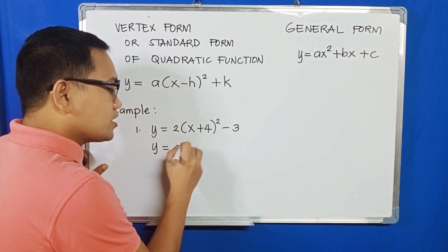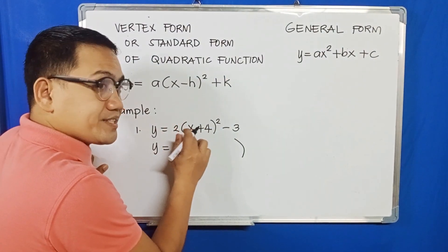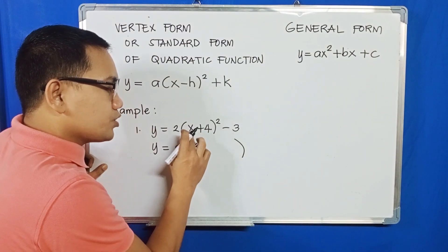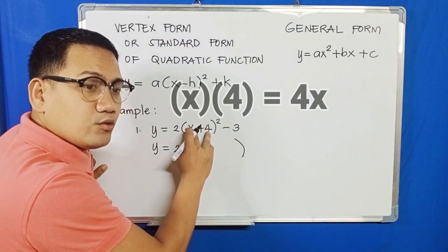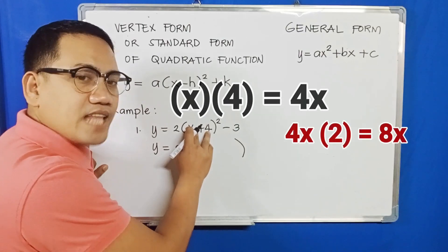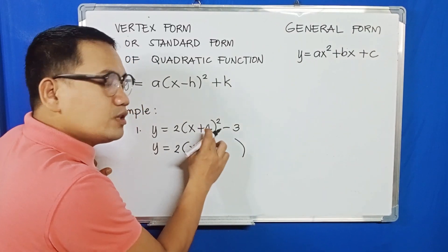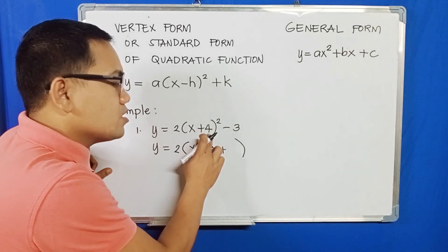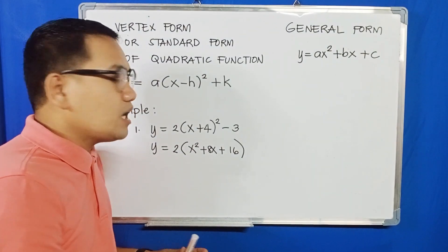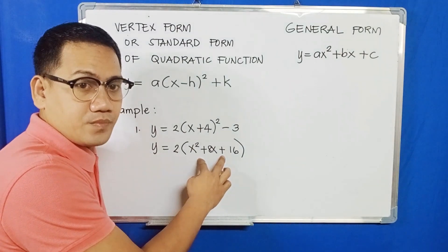We expand: y equals 2 times the quantity. Squaring the first term gives x squared. The product of the two terms is x times 4 equals 4x, doubled to 8x. Squaring the second term gives 4 squared equals 16. So expanding gives the perfect square trinomial x squared plus 8x plus 16, and we copy minus 3.